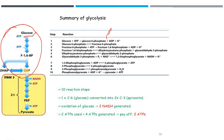Dihydroxyacetone phosphate is reversibly converted to glyceraldehyde-3-phosphate, which enters the payoff phase. The two important events in the payoff phase are reduction of NAD+ and formation of ATP. Two molecules of ATP are produced in the first step of the payoff phase, and one more ATP per molecule (two total for one glucose) is produced when phosphoenolpyruvate is converted to pyruvate.